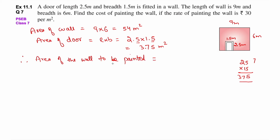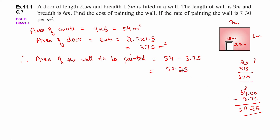Therefore, area of the wall to be painted = wall का total area minus door का area = 54 − 3.75. 54 में से 3.75 subtract करो: 10−5=5, 9−7=2, 3−3=0, so 50.25 meter square. यही area है जिसको paint करना है.